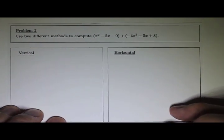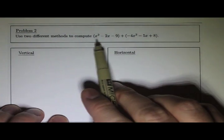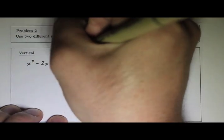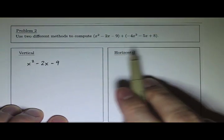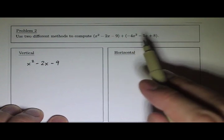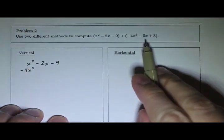Let's use the vertical method. I'll write that first polynomial out: x squared minus 2x minus 9. Then I'm going to write the second polynomial underneath it and line up the like terms. So the x squared terms are going to go underneath each other: minus 4x squared, then minus 5x, and then plus 8.